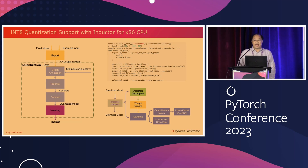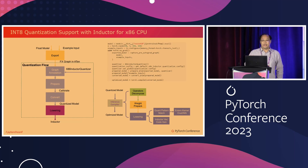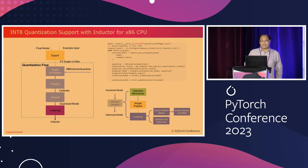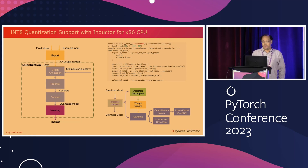For int8 inference, the model undergoes a Torch.export quantization flow. The quantization flow inserts quantization operations into the graph before compilation, while the compilation flow remains the same. We have introduced additional quantization patterns and int8 vectorization support to ensure it runs efficiently with the Torch Inductor CPU backend.